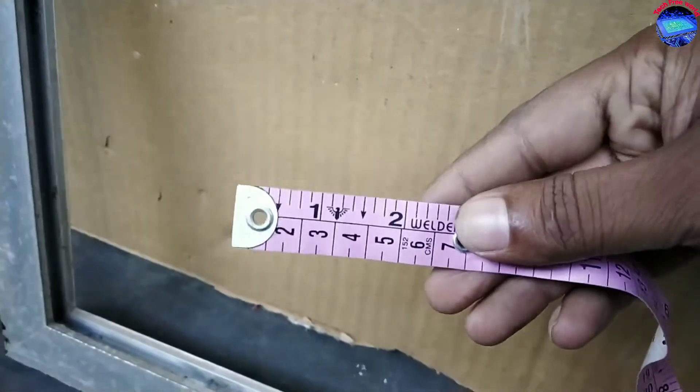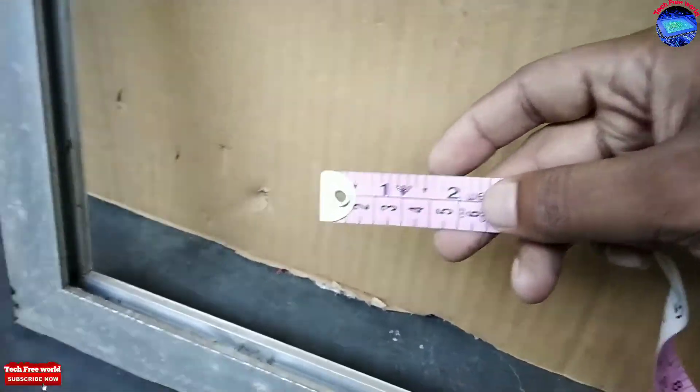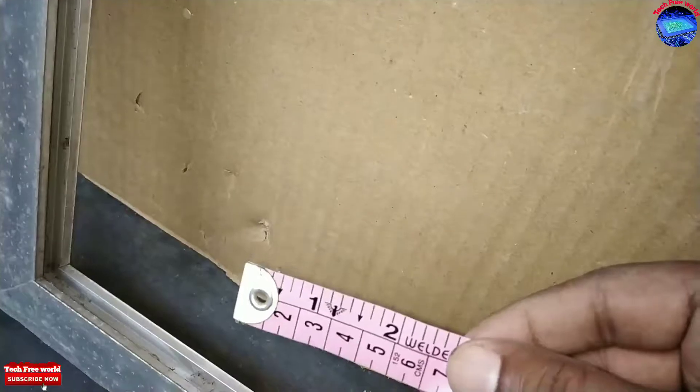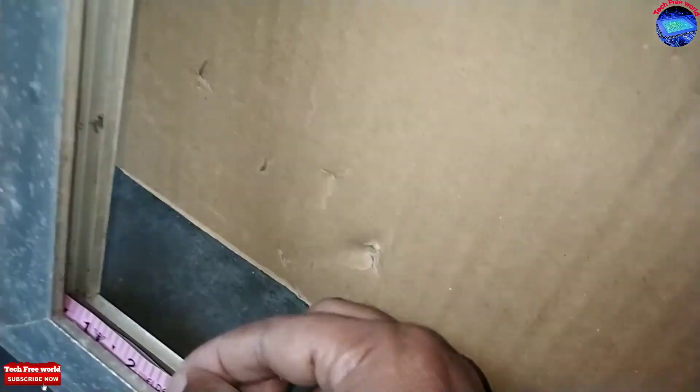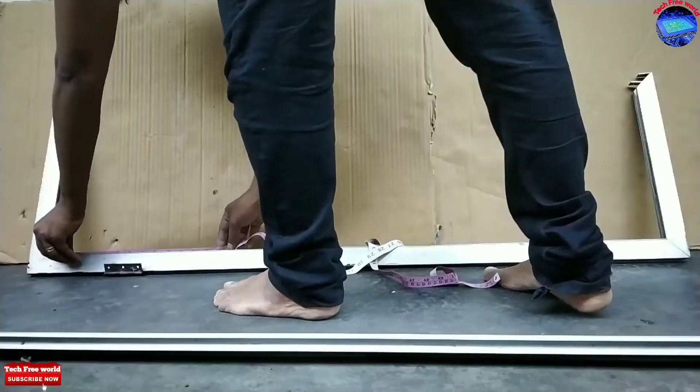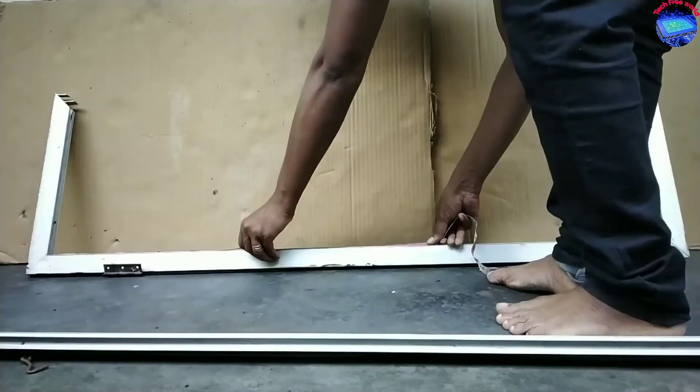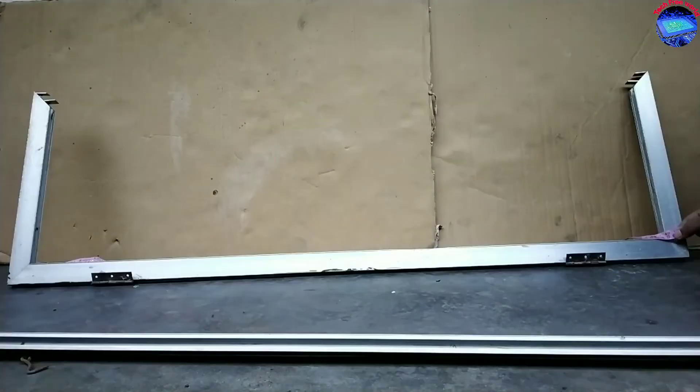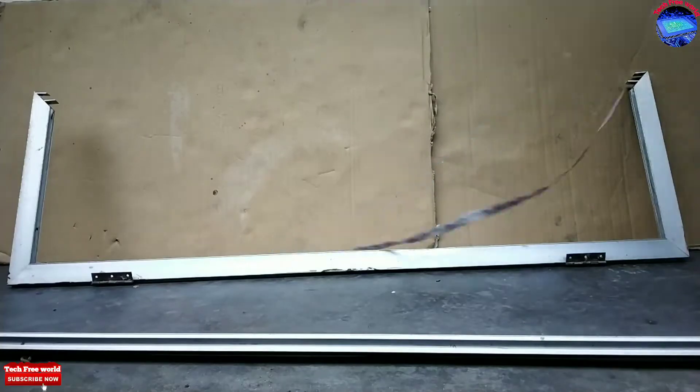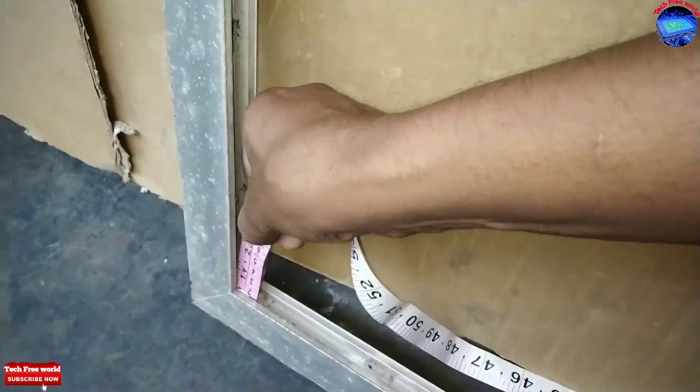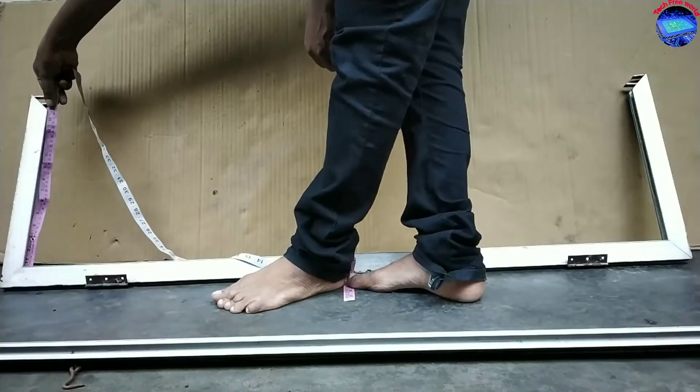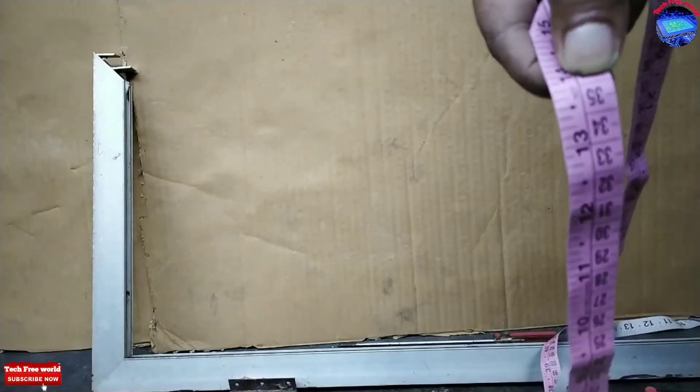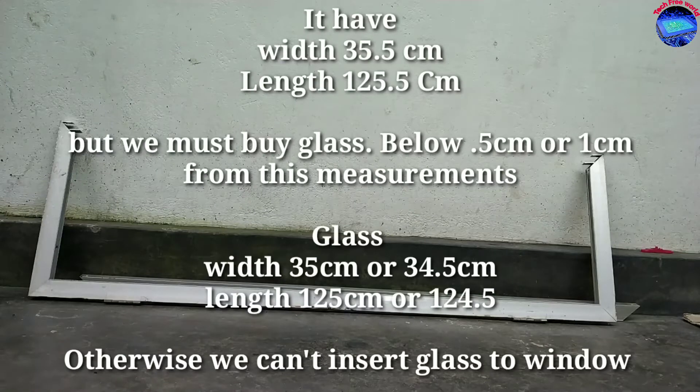Taking measurements of the window to buy a new glass. This window track has 1.5 cm depth. And take the measurement between two tracks. It has 125.5 cm length. Next I am taking the width of glass. It has 35.5 cm width and 125.5 cm length.